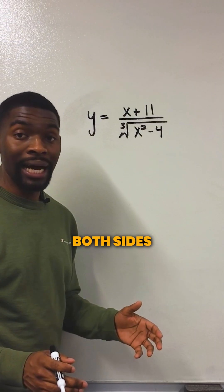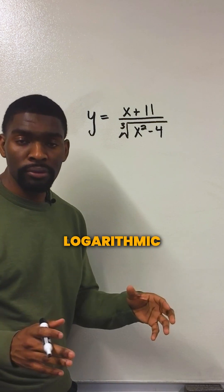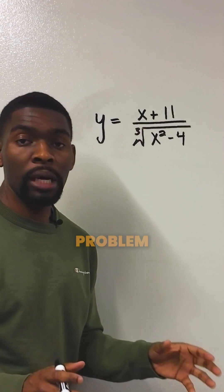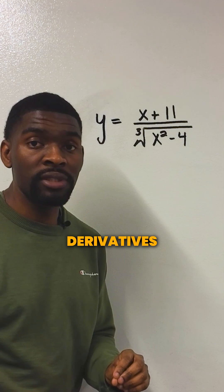So we're going to start by taking the ln of both sides, and then we're going to use logarithmic properties to break this problem down into simple derivatives. Here's the step.